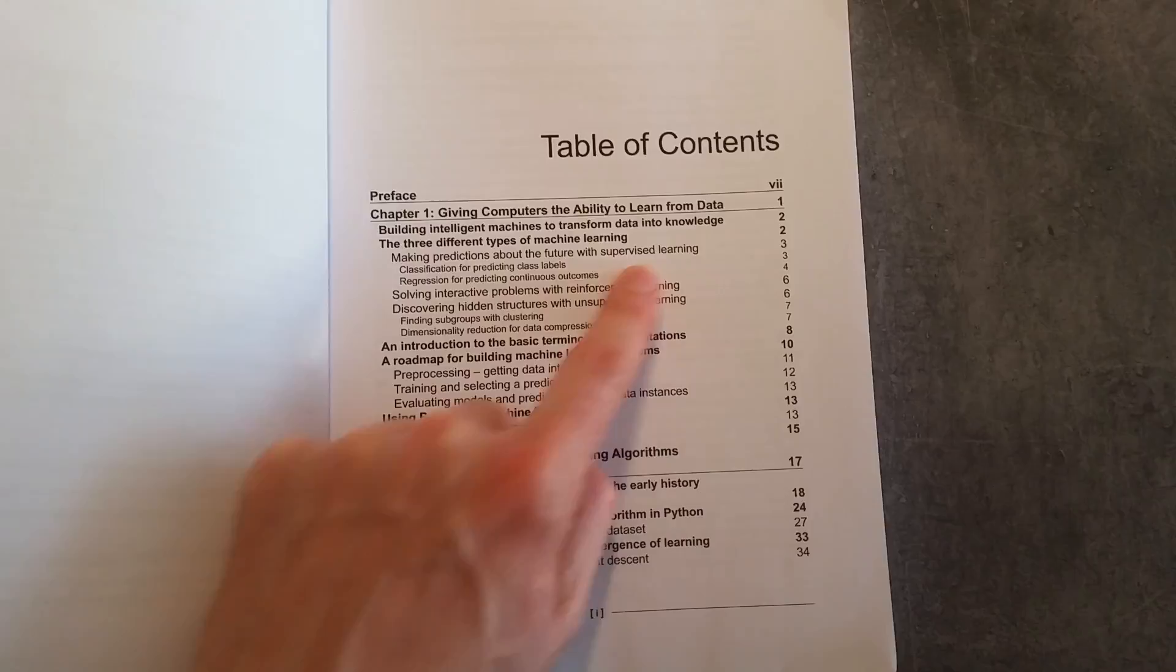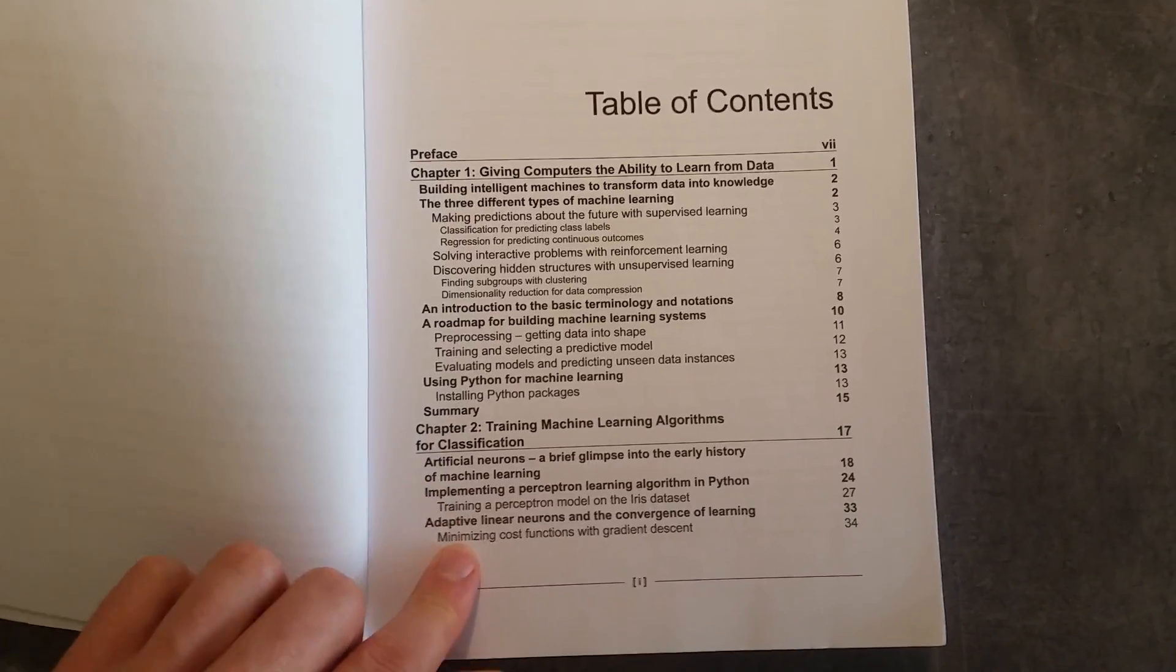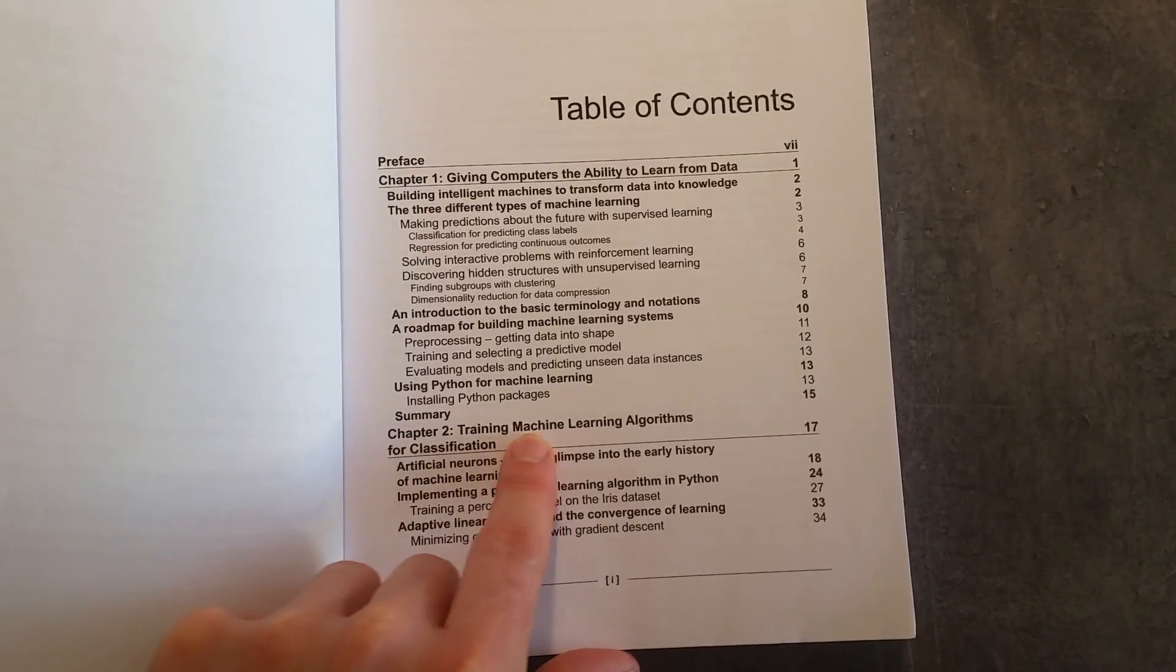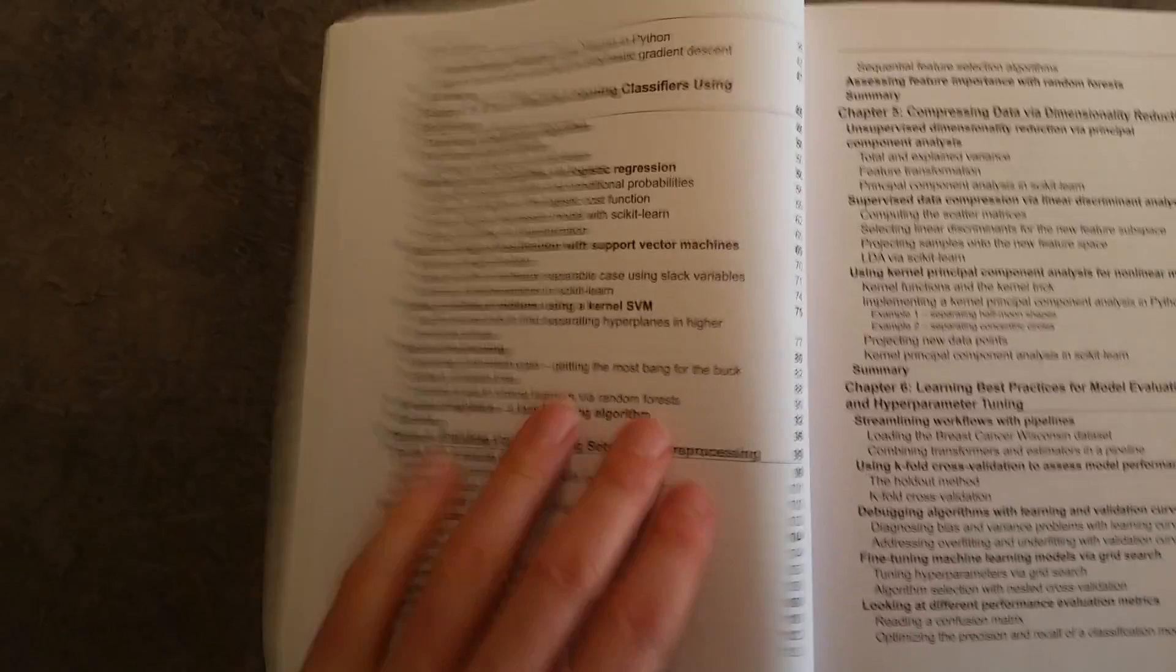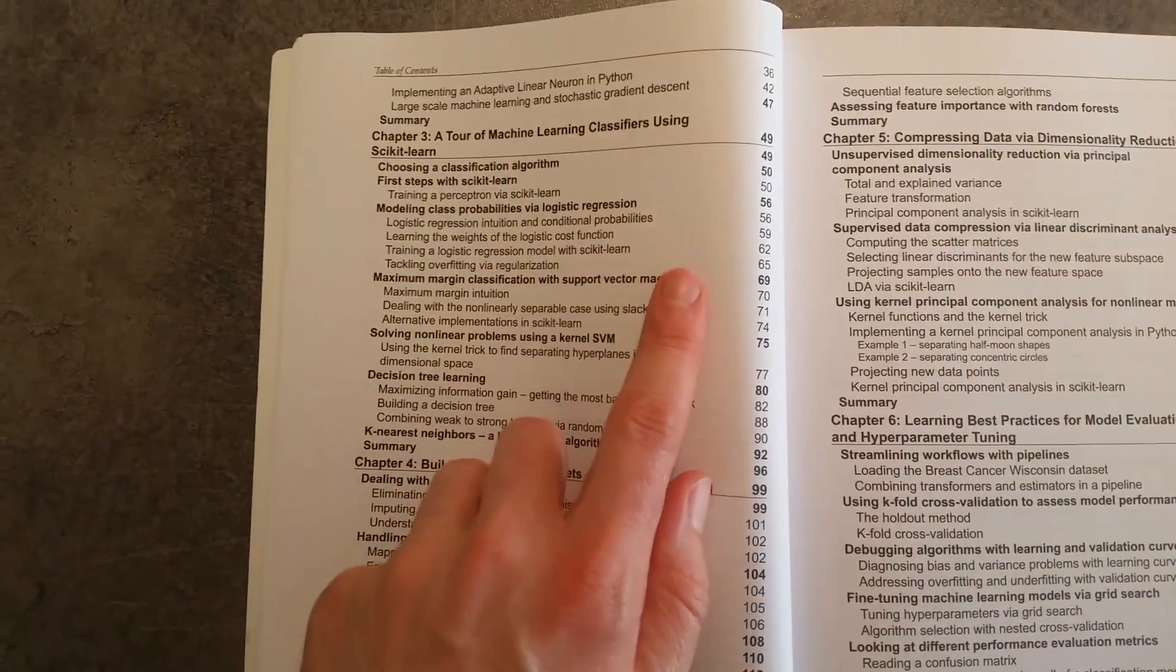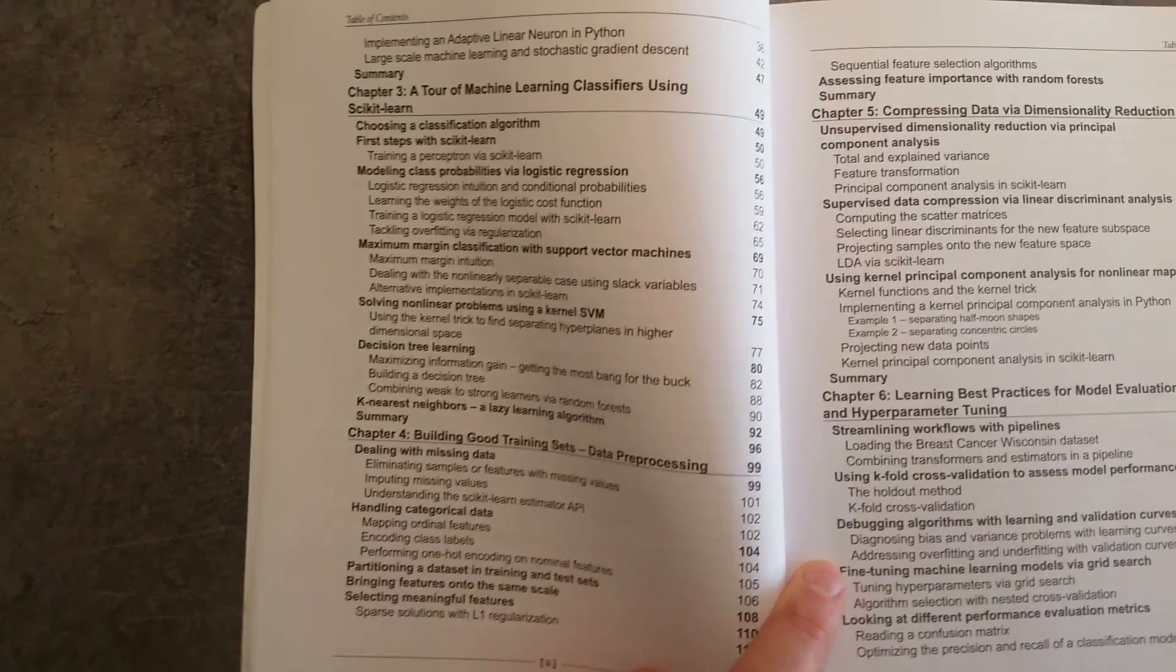What have we got here? Chapter one, giving computers the ability to learn from data. So we have a little brief summary about what machine learning actually is. And we talk about here in Chapter two, classification. Chapter three is quite useful because it goes through scikit-learn and talks about the Python library and how you can apply machine learning.